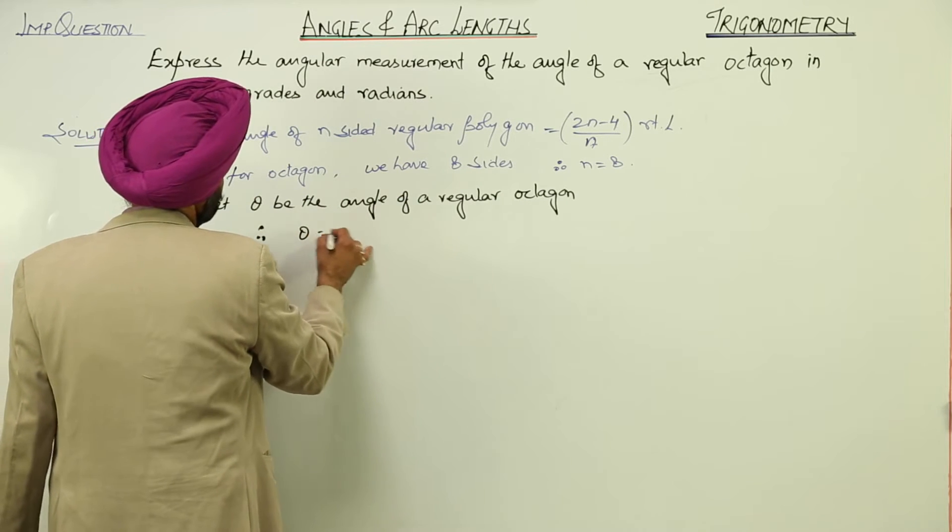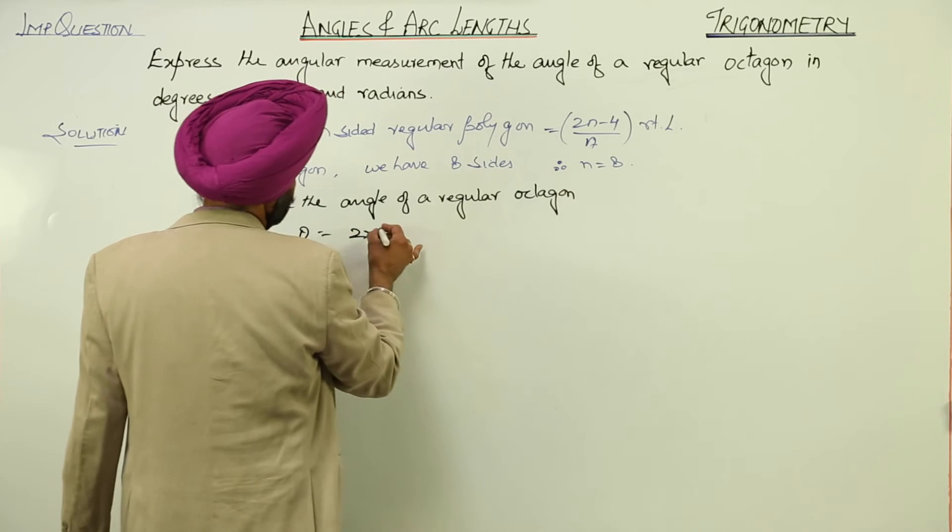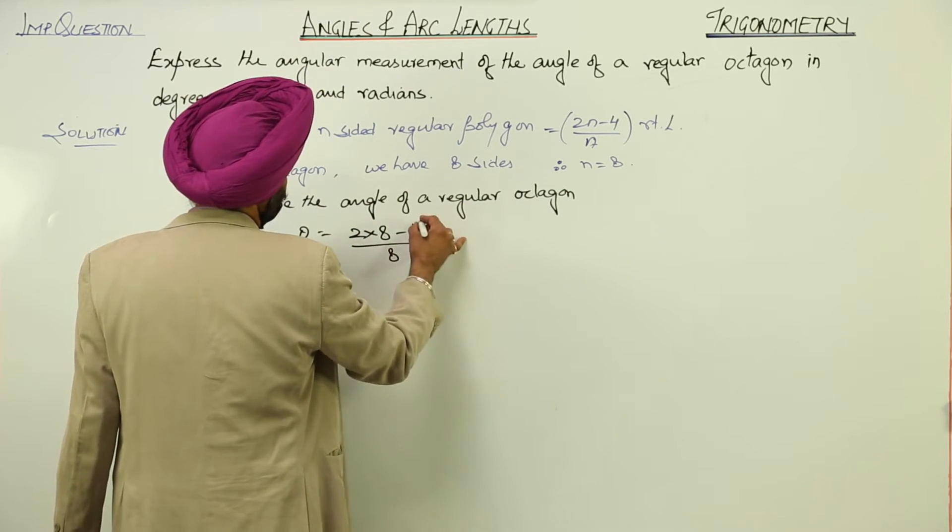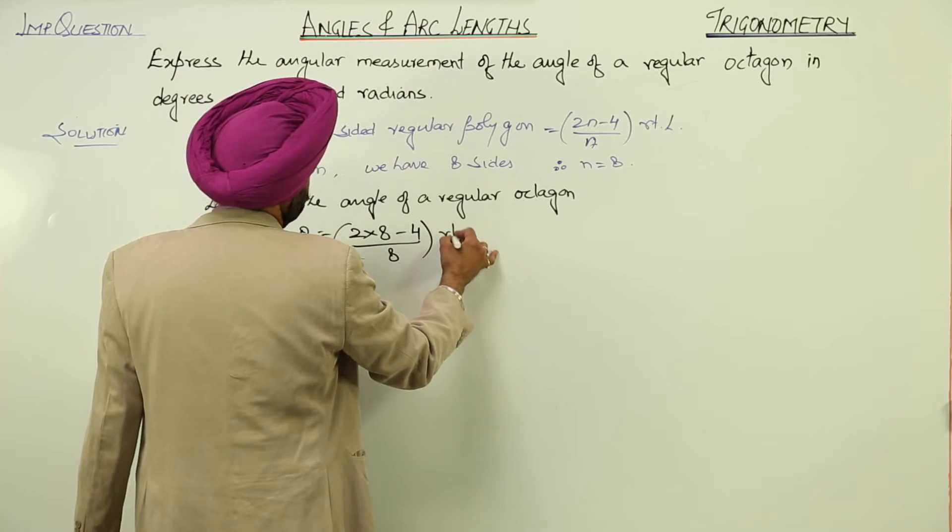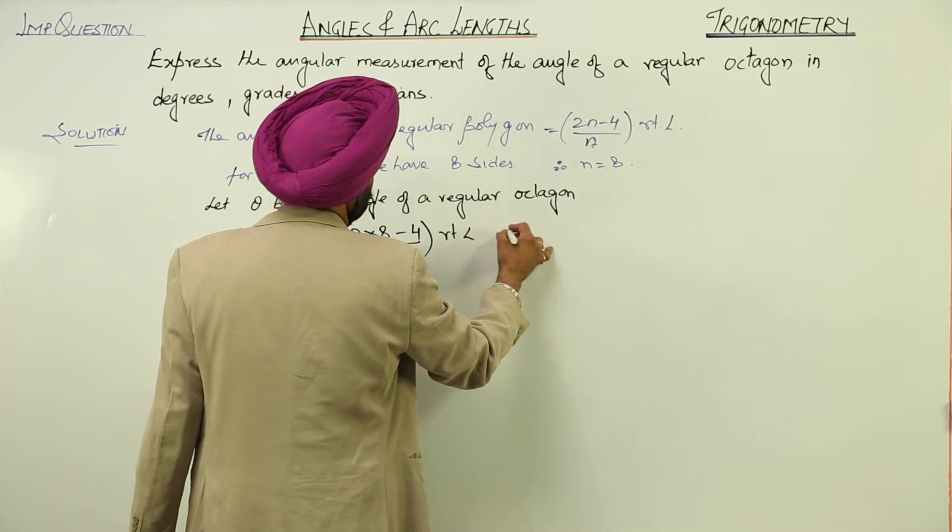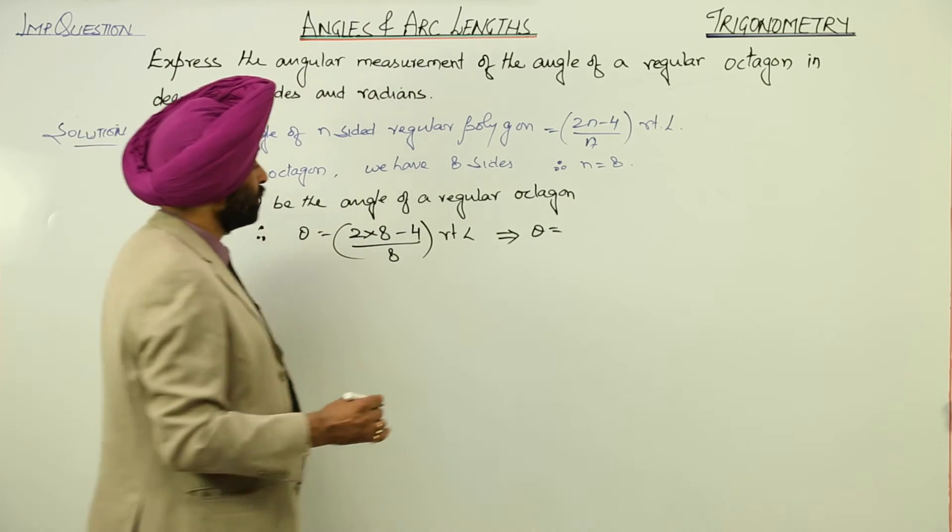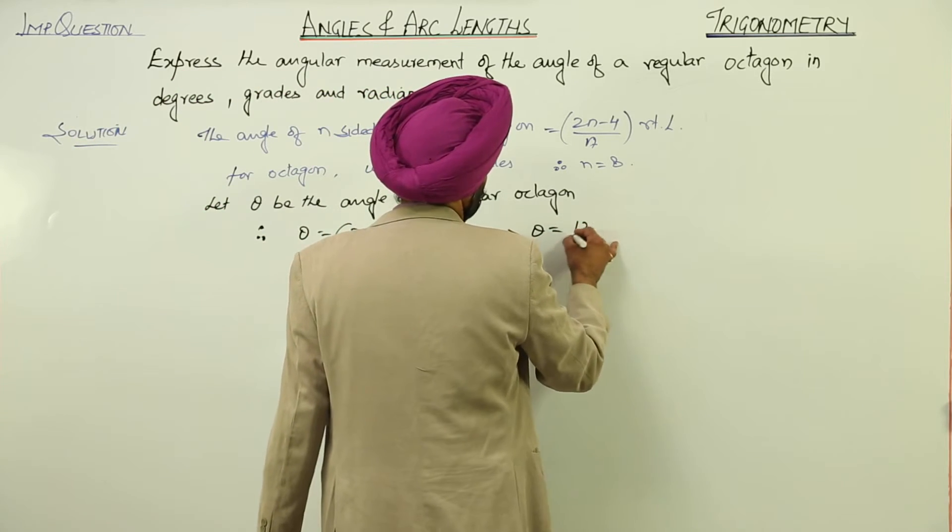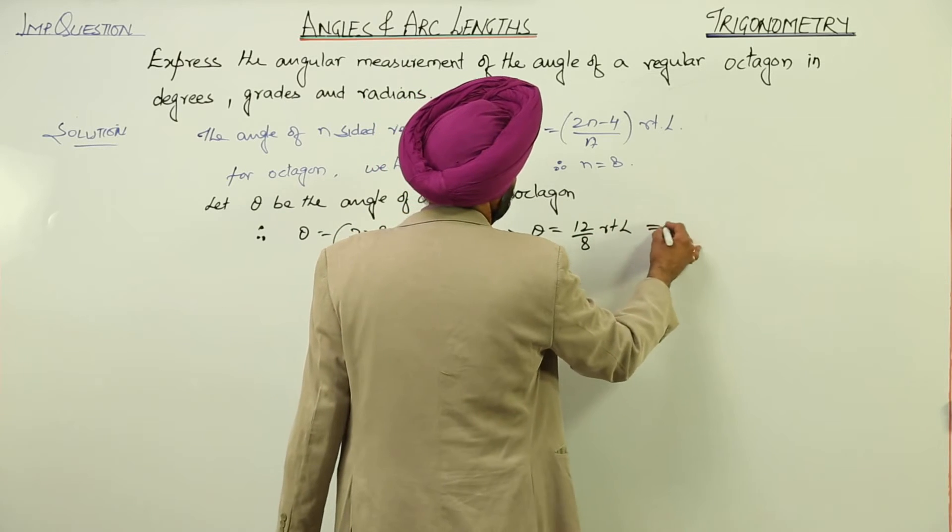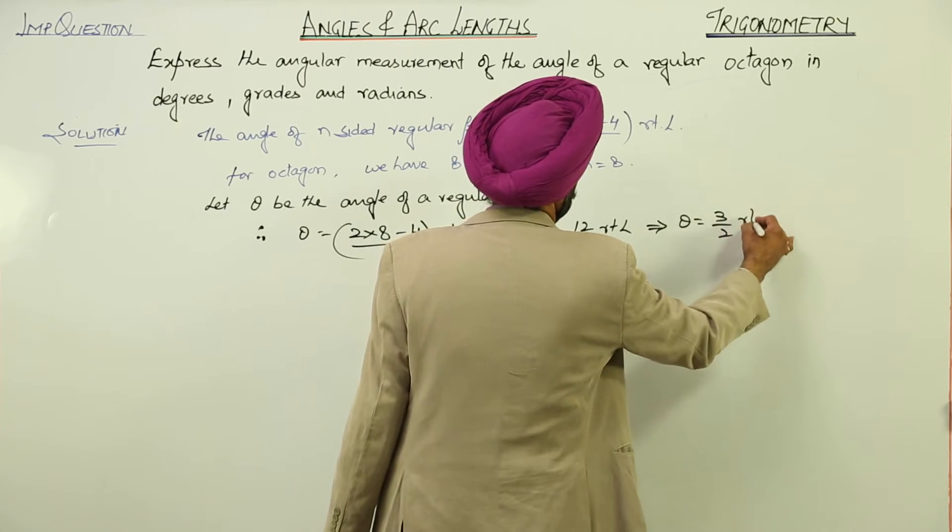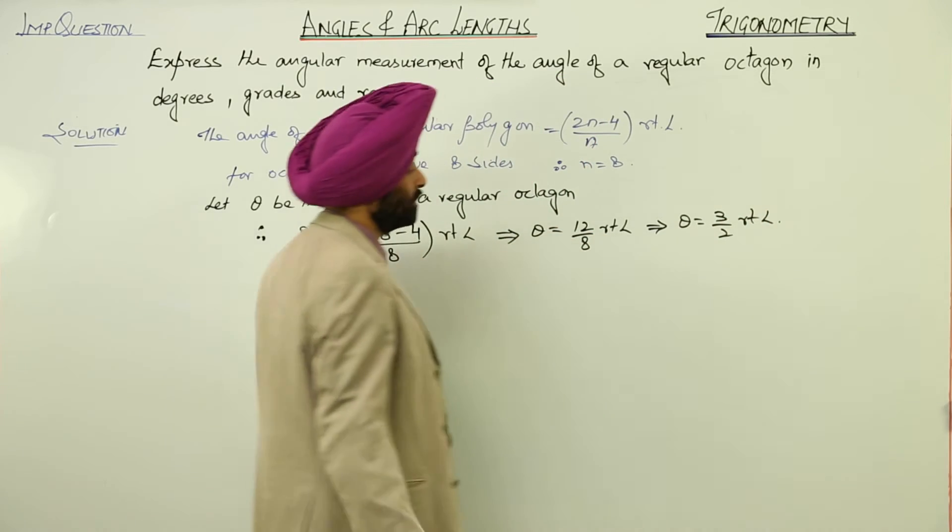Therefore, theta is equal to 2 times, now n is what? 8. 2 times 8 minus 4 upon 8 right angles. Theta is equal to, now 8 times 2 is 16 minus 4, 12 upon 8. 12 upon 8 right angles. Or theta is equal to 3 by 2 right angles. Is it clear?